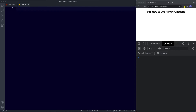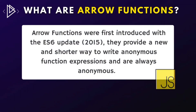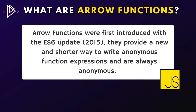Welcome back to lesson 46. Let's learn all about arrow functions. Arrow functions were first introduced in the ES6 update and they basically provide a new and shorter way to write anonymous function expressions. Another important thing to note before we dive into some code is that arrow functions are always anonymous, so if you want to invoke them, they must be assigned to a variable.